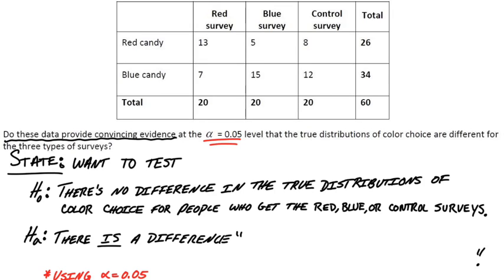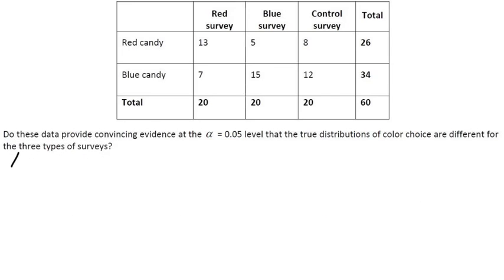All right, so the state step is good. We've got our hypotheses. We use context. And we mentioned the alpha level. Let's go ahead and get to the plan step. So we're going to plan to do a test. So let's name the type of test that we're going to run. So if the conditions are met, it's not just a chi-square test. We have to actually be specific. Is it goodness of fit? Homogeneity?